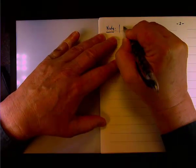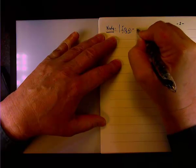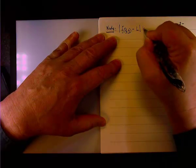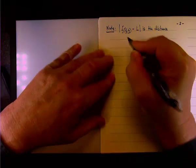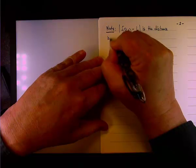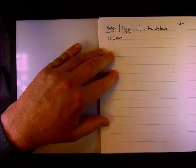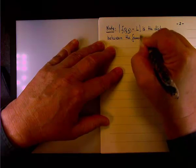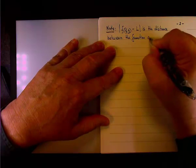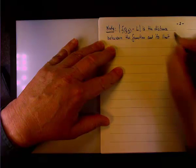We have two expressions over there. We're going to say that the absolute value of f of x, y minus L is the distance between the function and its limit.